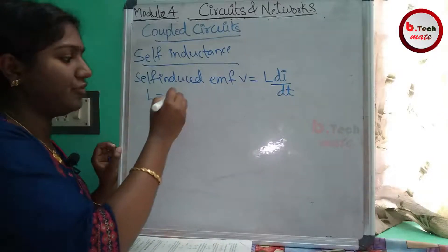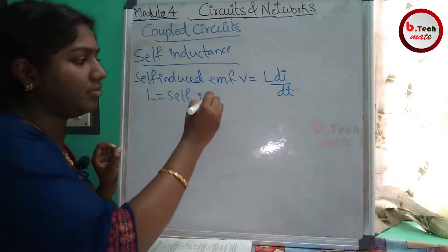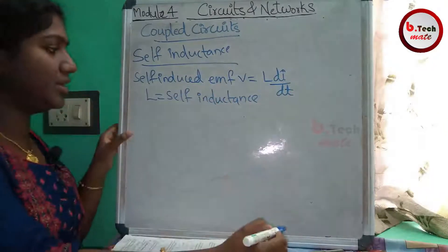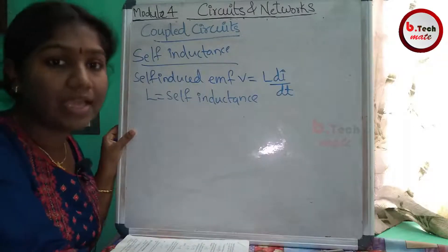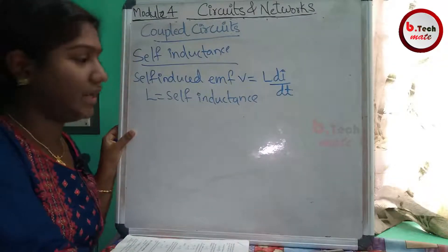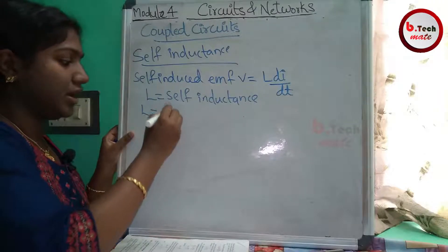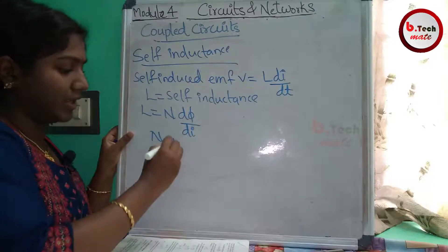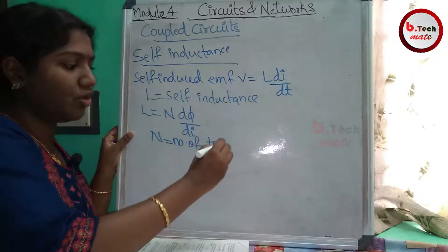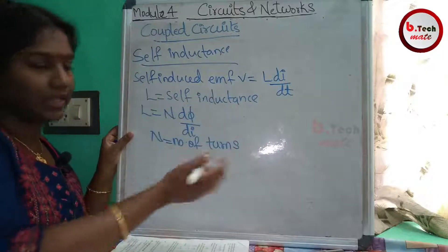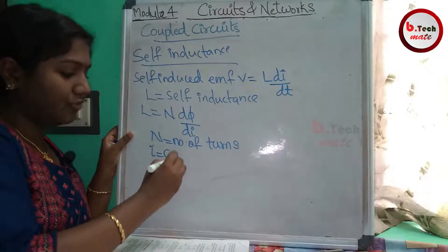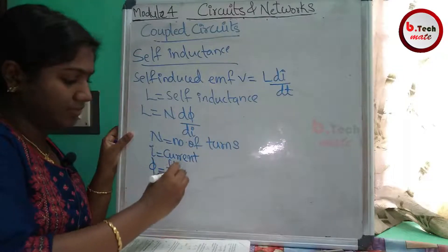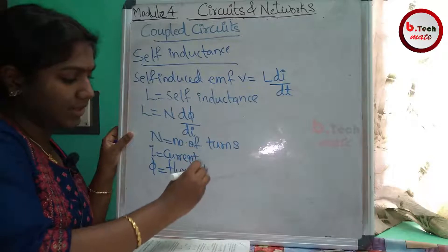We call it Self Inductance. Self inductance L is equal to N times dφ by di, where N is the number of turns in the coil and φ means flux linked with that coil.